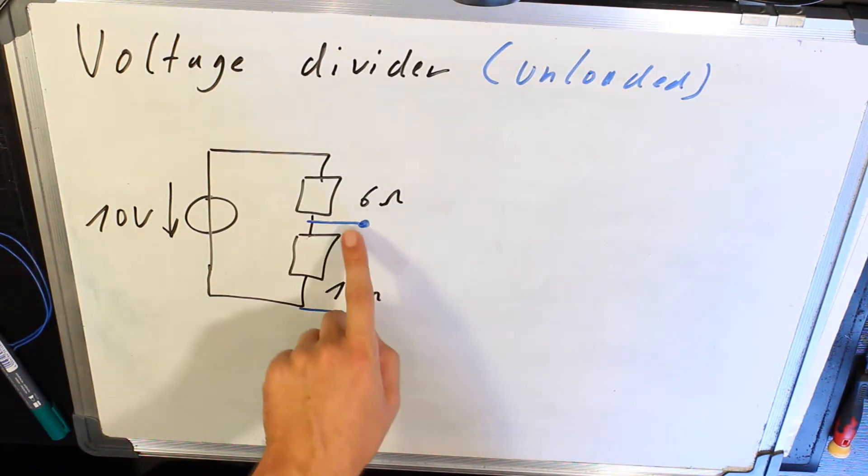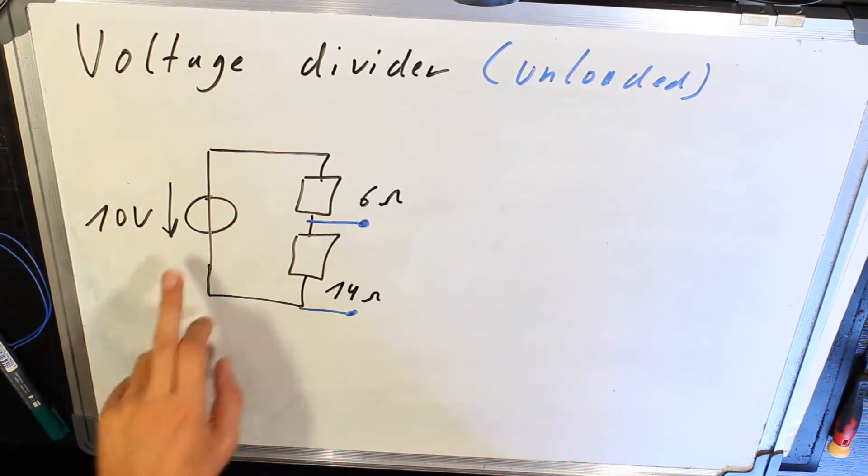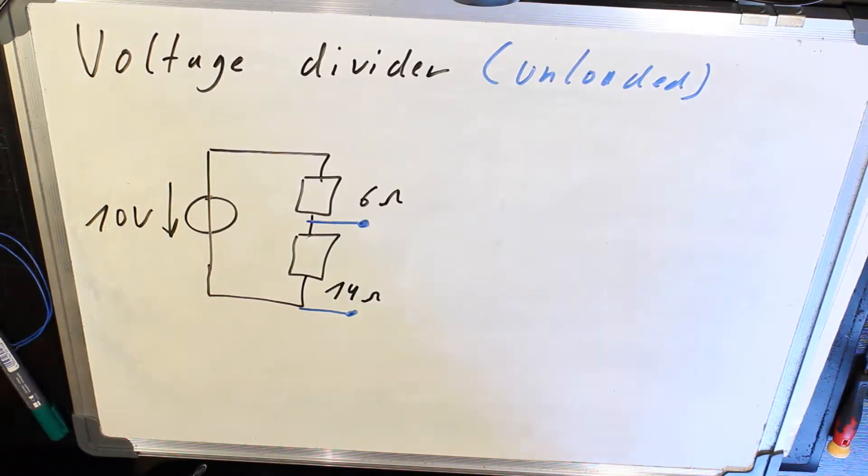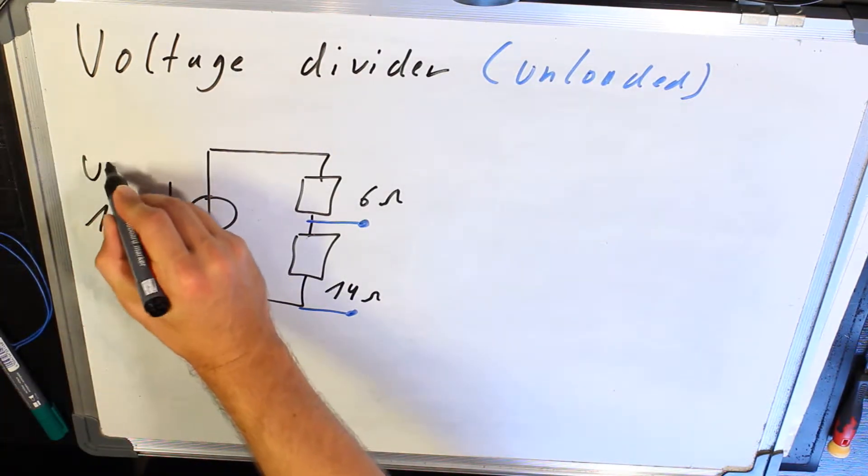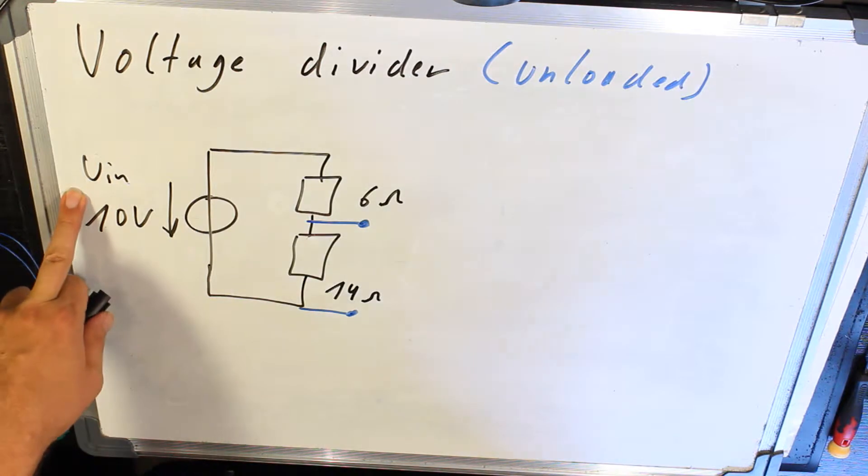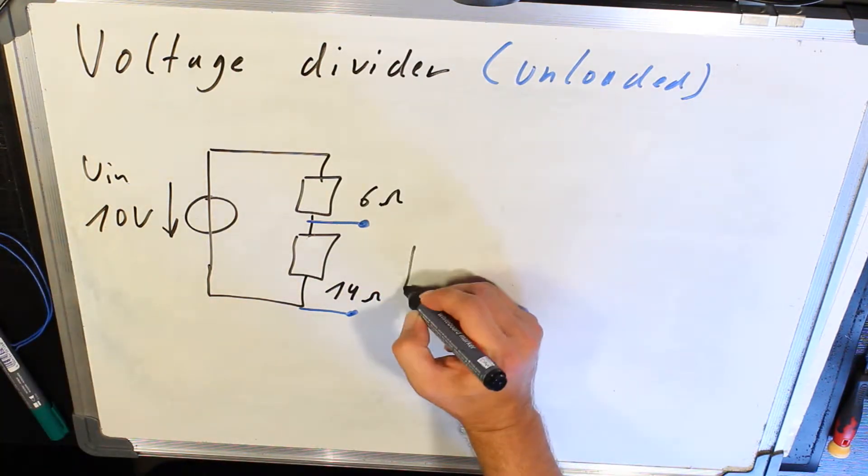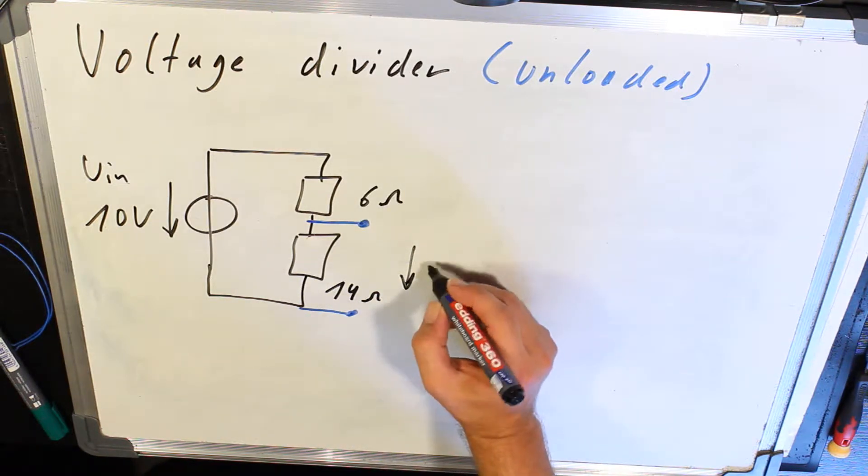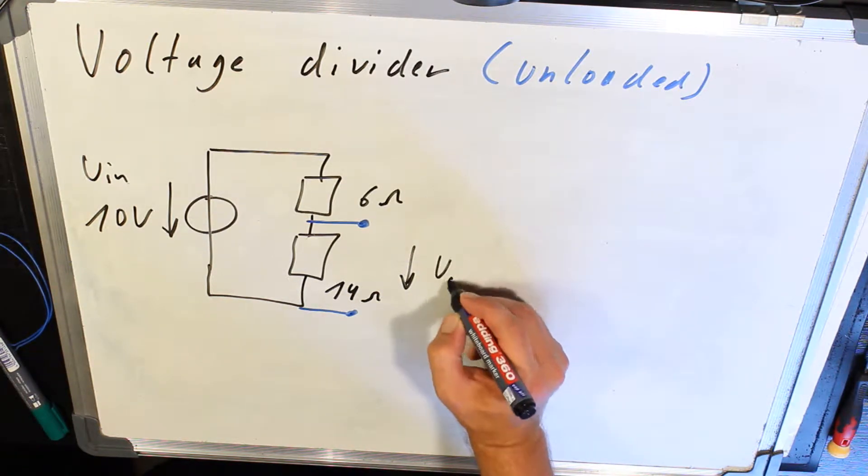That means here on the output there is no resistor. We have a voltage source with 10 volts. This is U_in, the input voltage. And the output voltage here, the voltage over the 14-ohm resistor, is U_out.